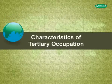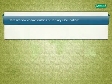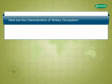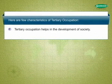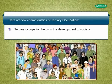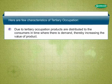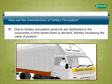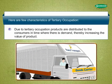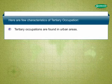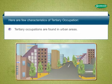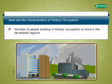Characteristics of Tertiary Occupation. Here are a few characteristics of tertiary occupation. Tertiary occupation helps in the development of society. Due to tertiary occupation, products are distributed to the consumers in time where there is demand, thereby increasing the value of the product. Tertiary occupations are found in urban areas. The number of people working in tertiary occupation is more in the developed regions.